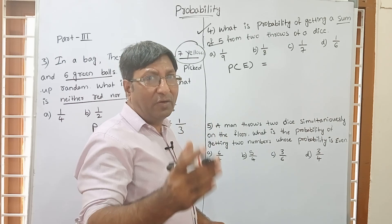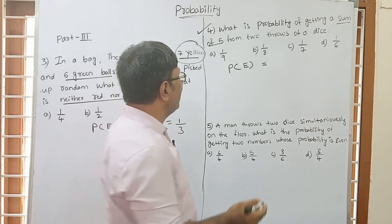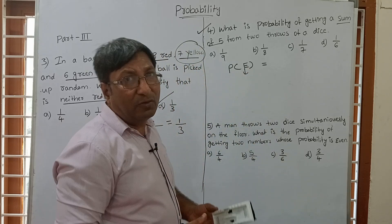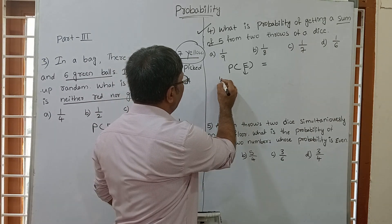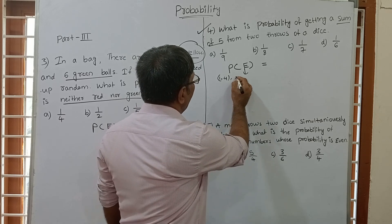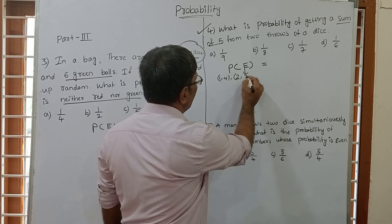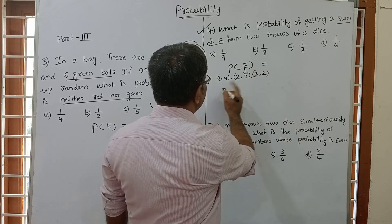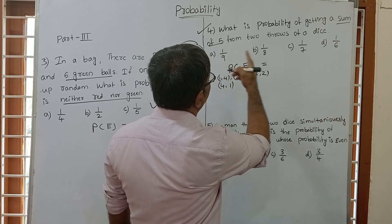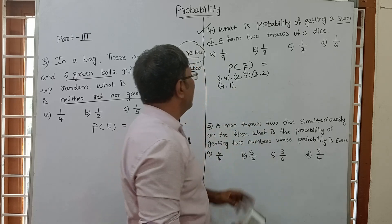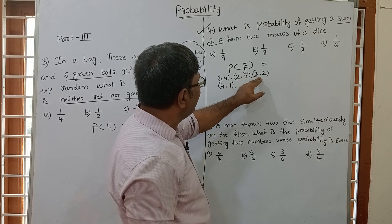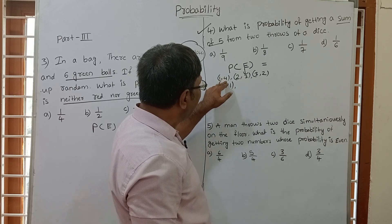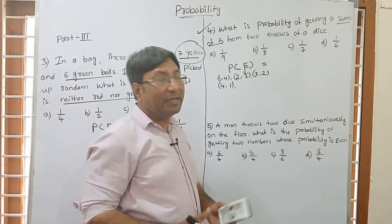The 36 outcomes come from combinations like 1-1, 1-2, 1-3, 1-4, 1-5, 1-6, then 2-1, 2-2, 2-3, 2-4, 2-5, 2-6, and so on. We need to find how many outcomes have a sum of 5. Those are: 1 and 4 (sum 5), 2 and 3 (sum 5), 3 and 2 (sum 5), 4 and 1 (sum 5). Only these outcomes are favourable.